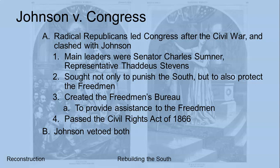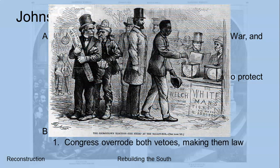Johnson's argument for vetoing the Freedmen's Bureau was that it's not the job of the federal government to provide for people — that should be left to states and localities. His argument for vetoing the Civil Rights Act of 1866 was that protecting people's rights is also the job of the states. Congress overrode both vetoes. This is historically significant — these were the first major pieces of legislation that a president vetoed and Congress successfully overrode.